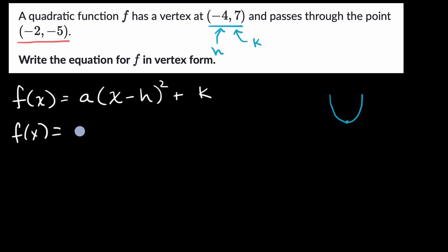So we can just substitute those in for h and k to start building out our equation for f. So f of x is going to be equal to a times x minus, h is negative four. We have to be very careful when we're subtracting negatives. So it's negative four there, squared plus k. k is seven.